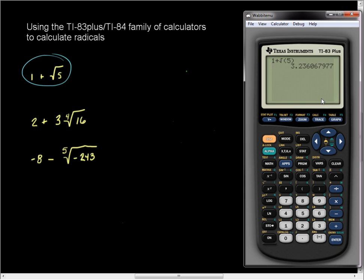And there's our answer. And that makes sense, the square root of 5 should be a little more than 2, add 1, it should be a little more than 3.